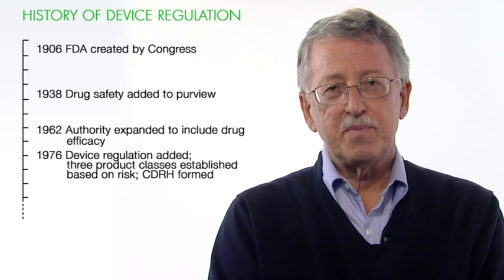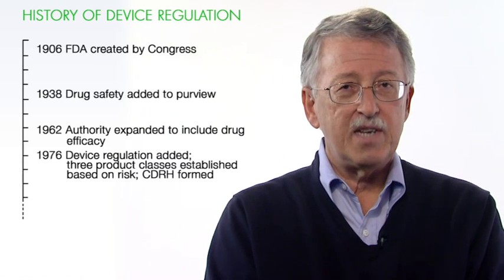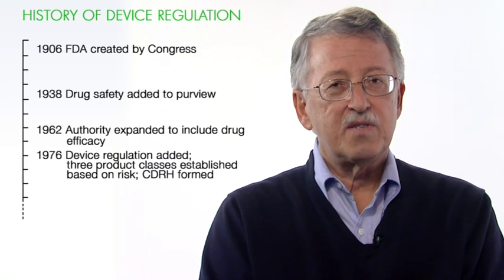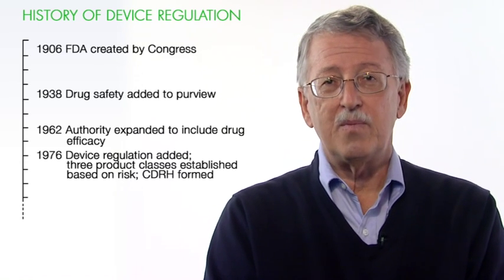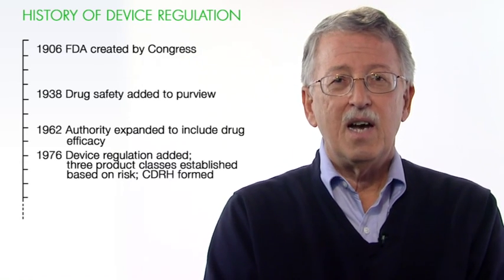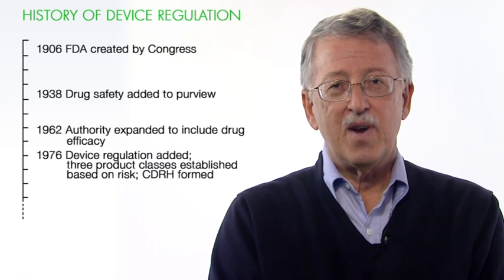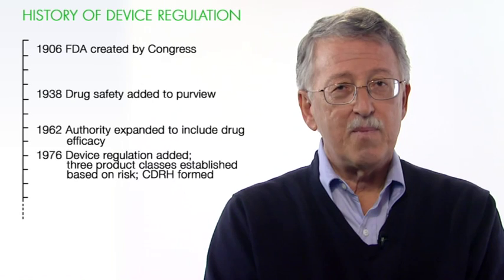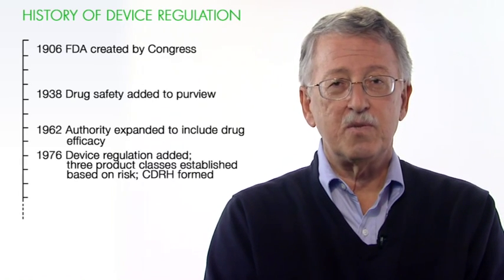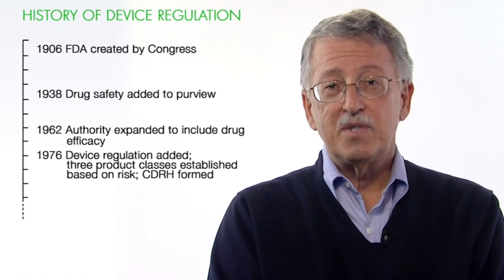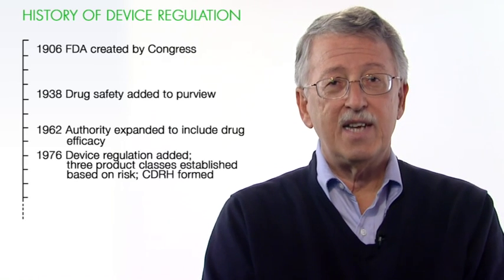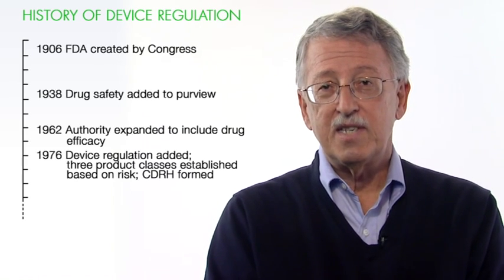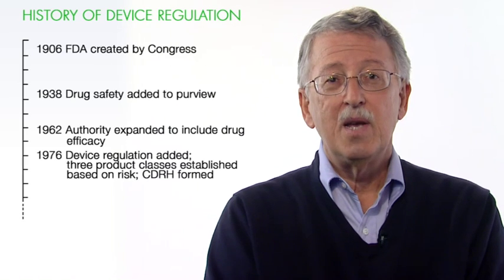The law also contained a number of specific rules with respect to compliance for medical devices. So the challenge was for Congress and for FDA, once the device law was passed, to figure out how to regulate products that could range from things as simple as bandages to very complex products like dialysis machines or pacemakers. When the law was enacted, Congress set up three classes of products according to risk, and additionally they set up three pathways to market based on risk.